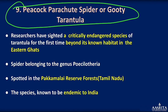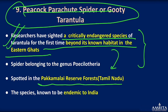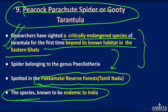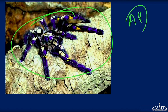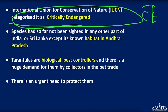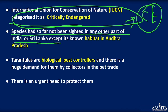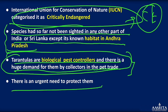Next is the Peacock Parachute Spider, a very beautiful spider. Researchers have sighted this critically endangered tarantula for the first time beyond its known habitat in the Eastern Ghats. It was previously found only in Andhra Pradesh but has now been found in a reserve forest in Tamil Nadu — which is why it was in the news. It is endemic to India. Tarantulas are biological pest controllers, leading to high demand from collectors in the pet trade.